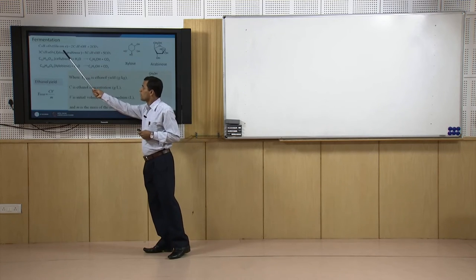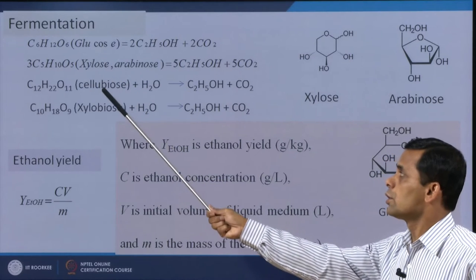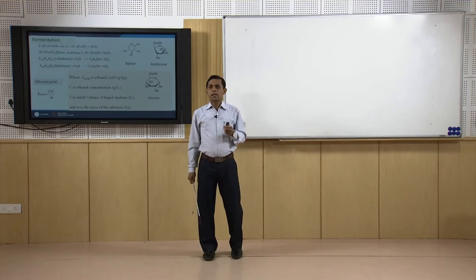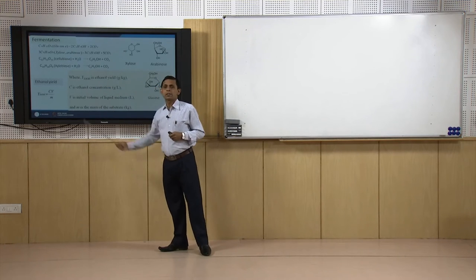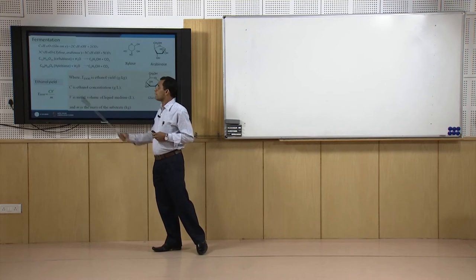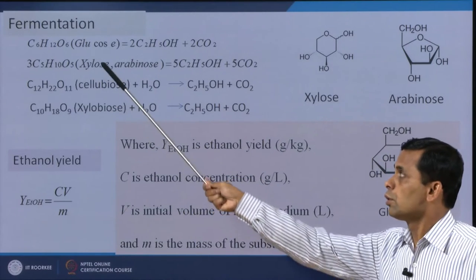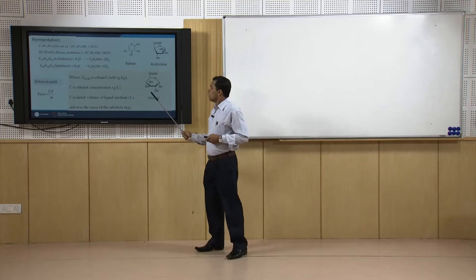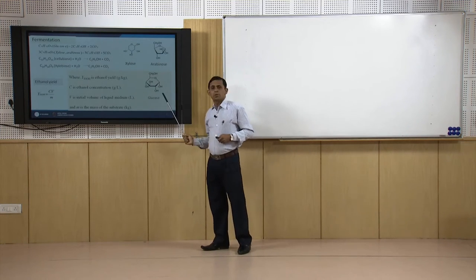We have four feedstock sugars: glucose, xylose, cellobiose, and xylobiose. Cellobiose is the disaccharide of glucose and xylobiose is the disaccharide of xylose or arabinose. From all those sugars we get ethanol and carbon dioxide. These are the structures of xylose, arabinose, and glucose — six-carbon sugars and five-carbon sugars.